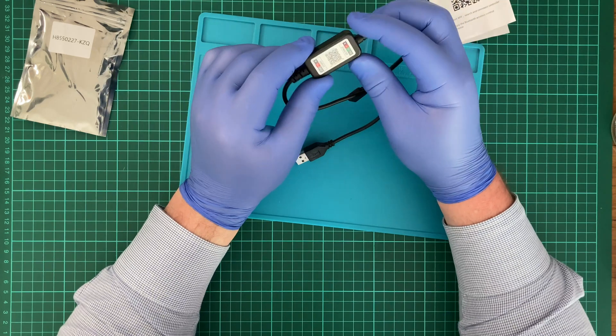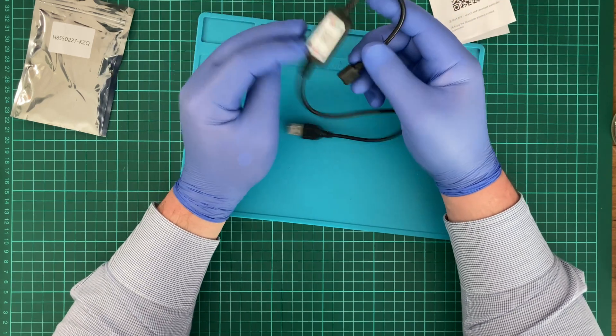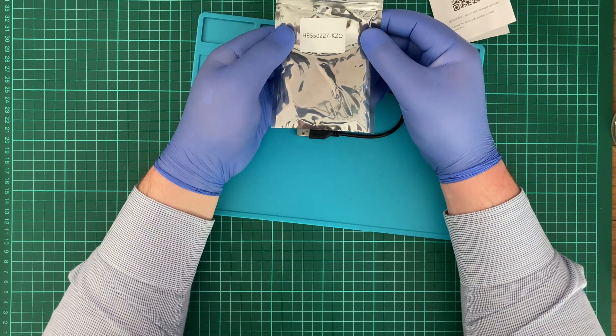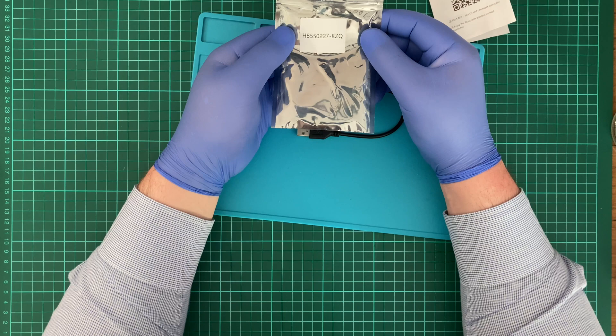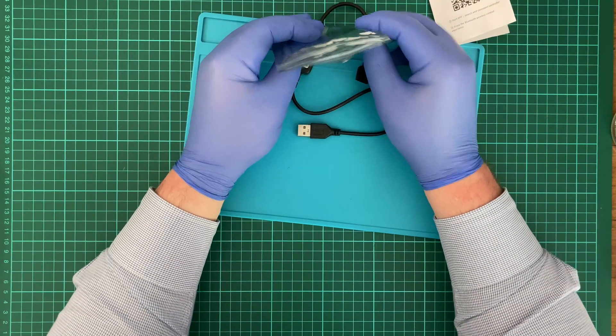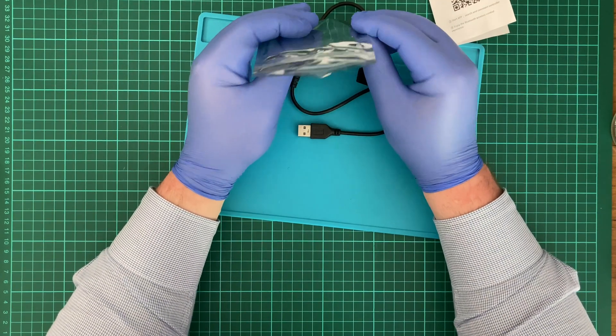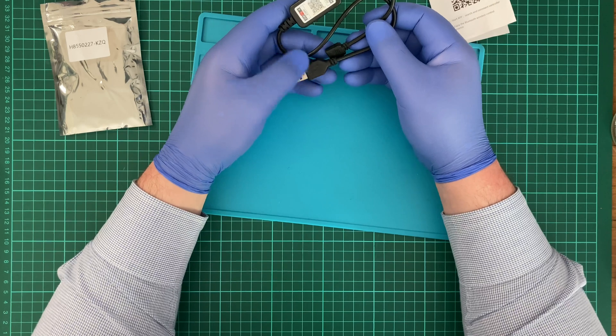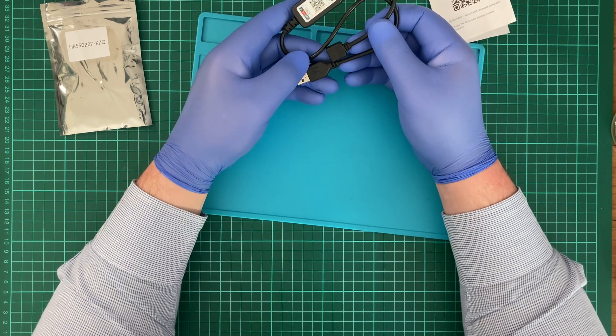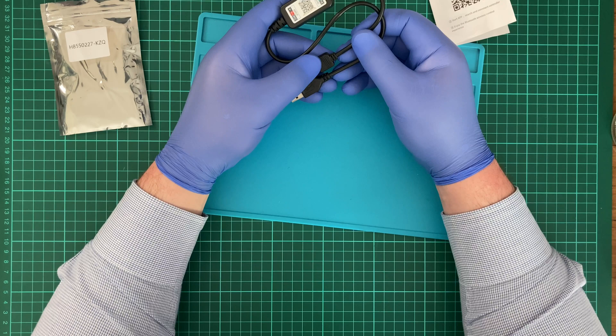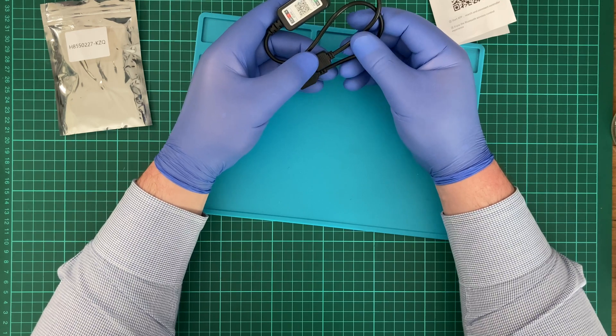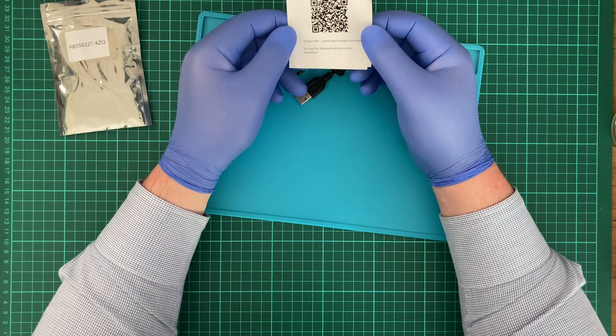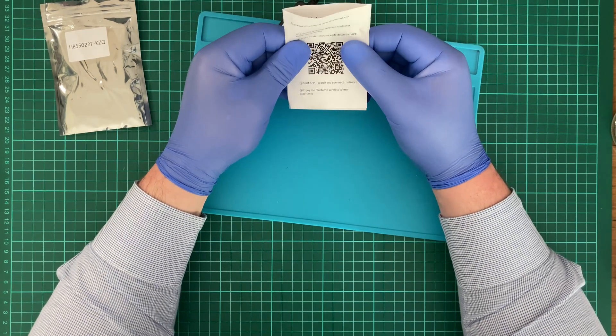But, wow, there is not much in that. Oh, well. So, this is labeled H8550227-KZQ. Now, in saying all this, I'm not going to list where I bought this from specifically, because there are going to be who knows how many other sellers selling this sort of thing. And even if you come across this like five years later, ten years later, they might not even be selling this unit anymore. So, providing a link like that is kind of pointless.